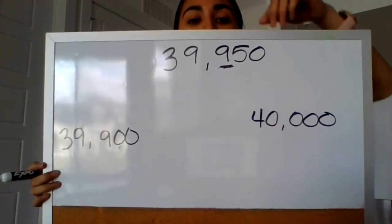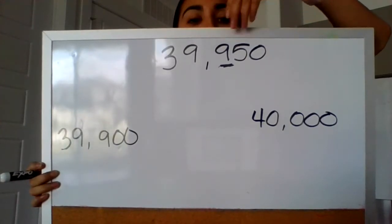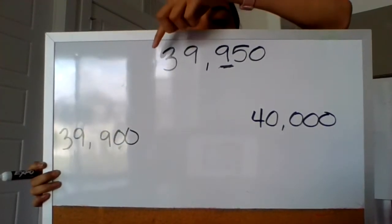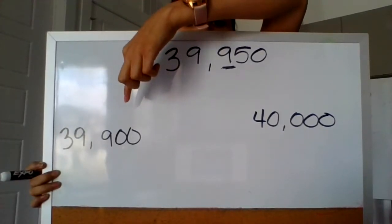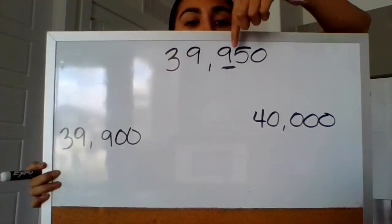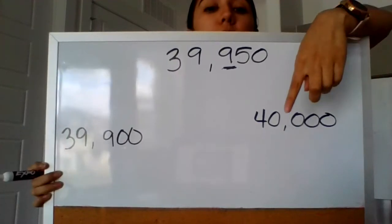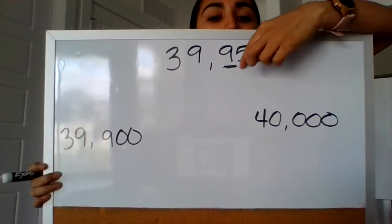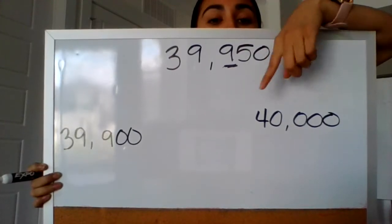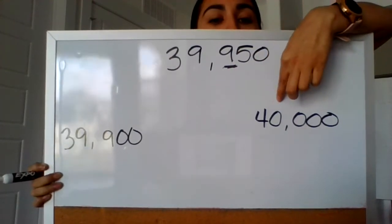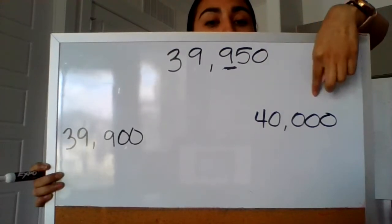So they want to know, will 39,950 round down to 39,900? Or is it going to round up to 40,000? Now it's 40,000 because this number underlined is a 9. So if we round up to the nearest 100, it's going to make a new 1,000. And that's why it's 40,000.